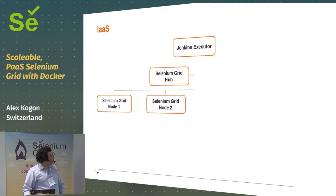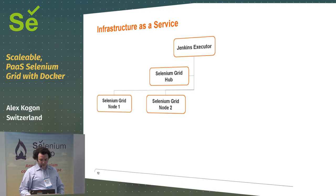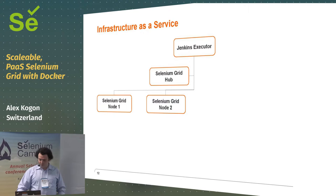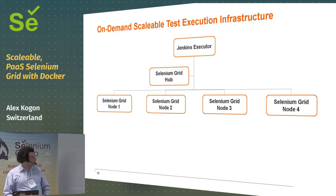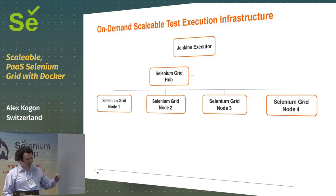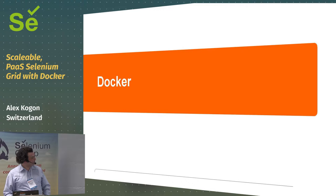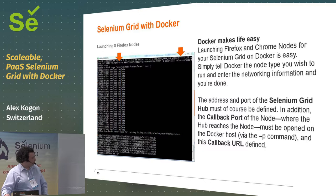IaaS — Infrastructure as a Service. What kind of infrastructure are we talking about? On-demand scalable test execution infrastructure. I have my grid with two nodes. I want one test — one of my nodes is being used. I run another test — another node is used. Now I want to run a third test. Well, I can wait until these are done, or I can deploy some more nodes and bring up a couple more. Docker — what is it and how does it make our life easy?